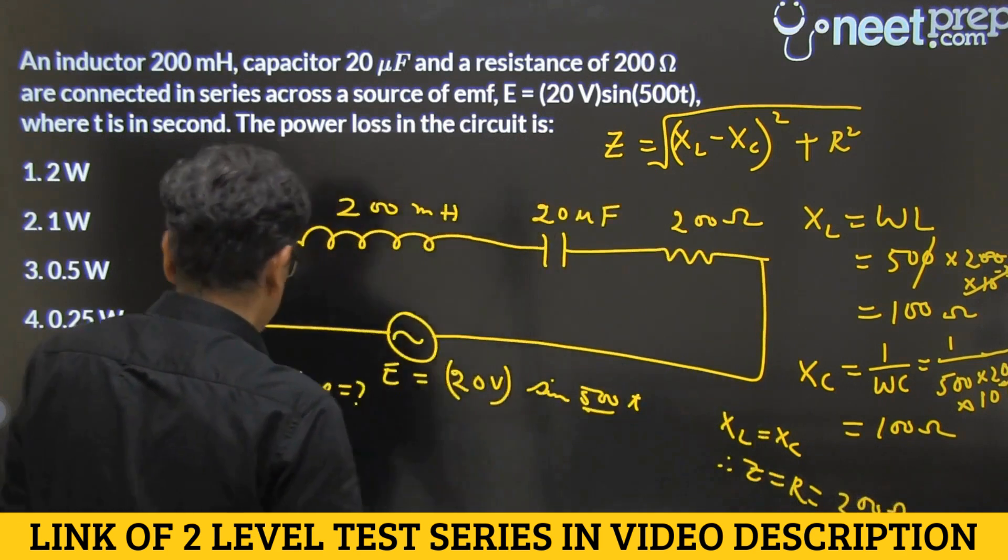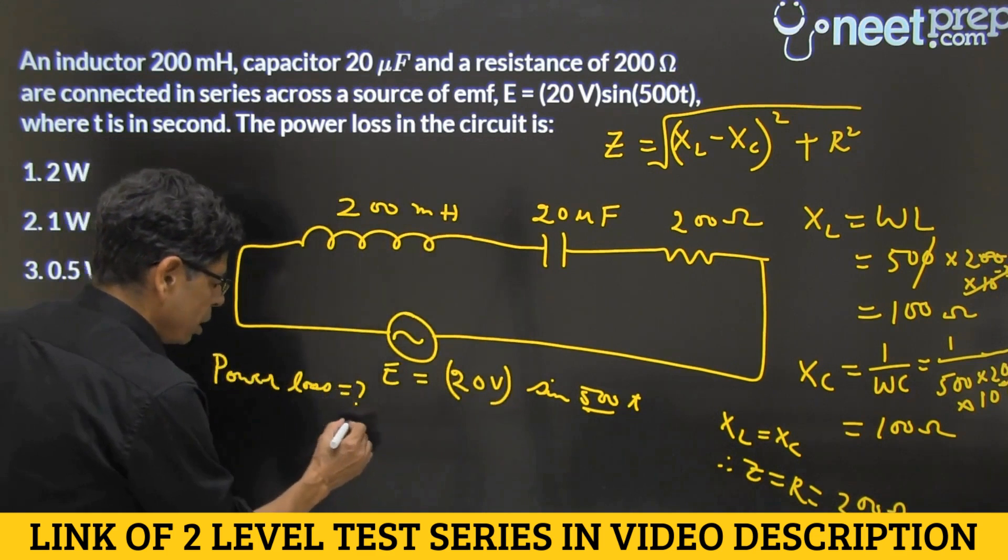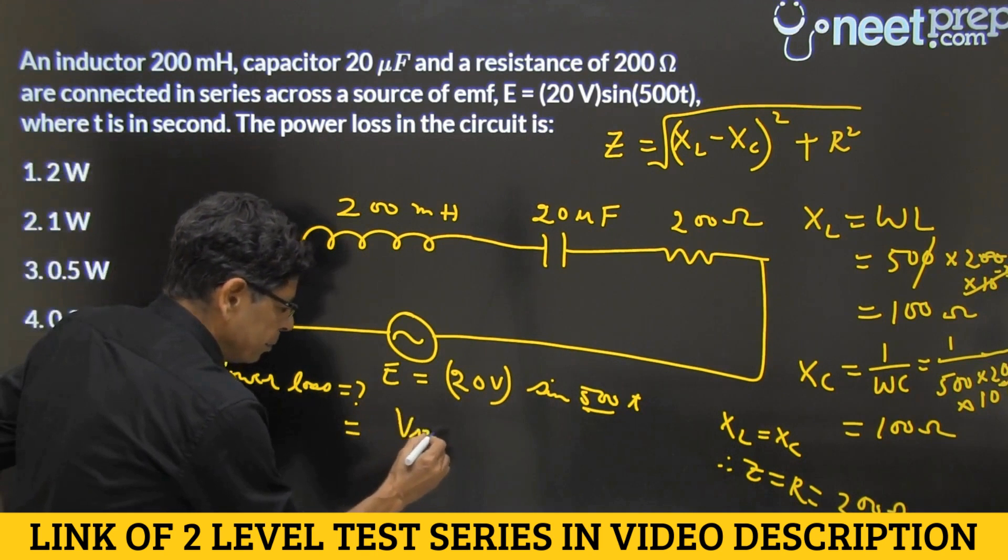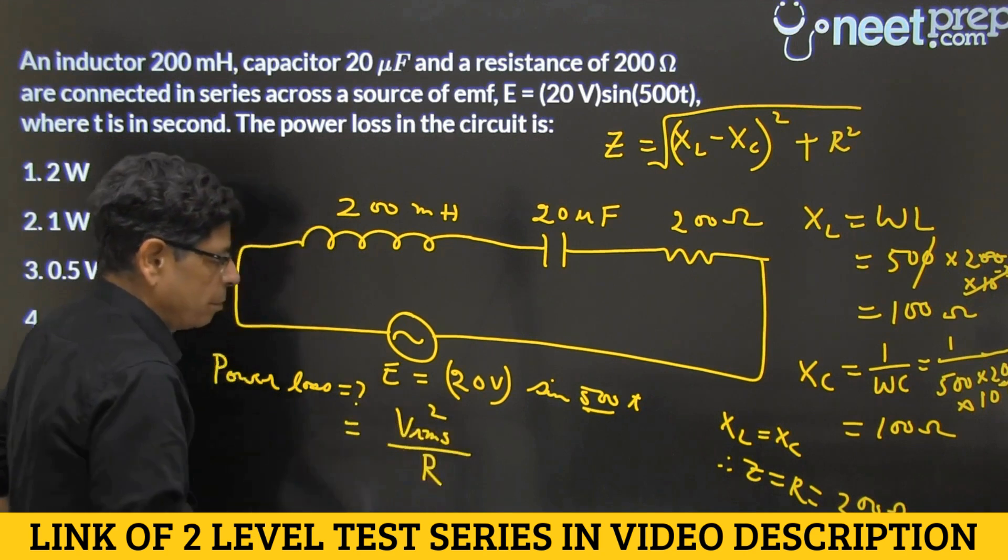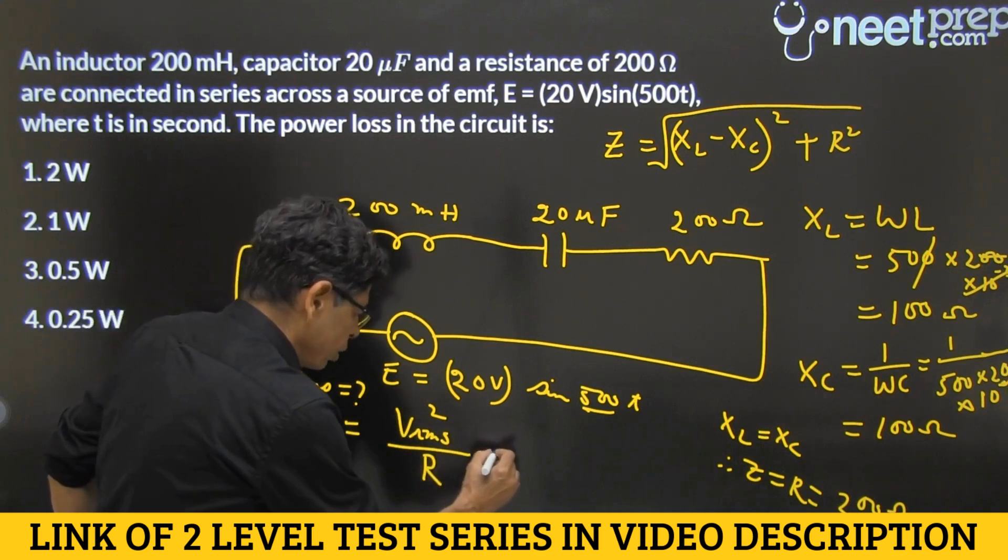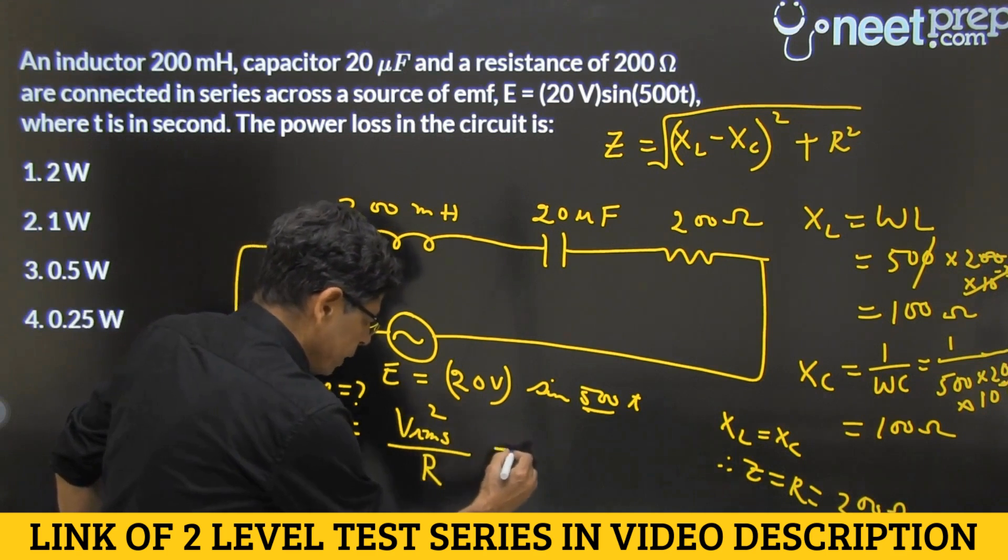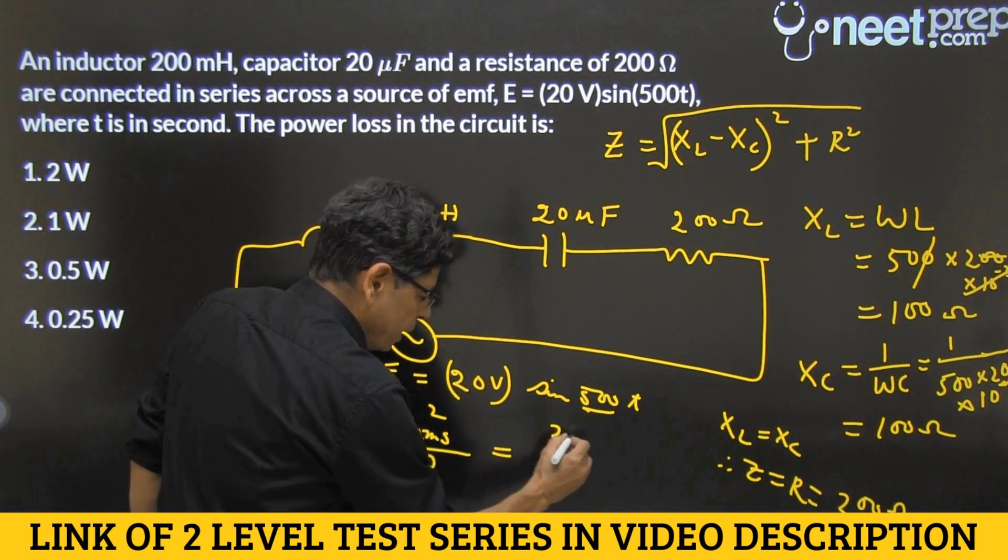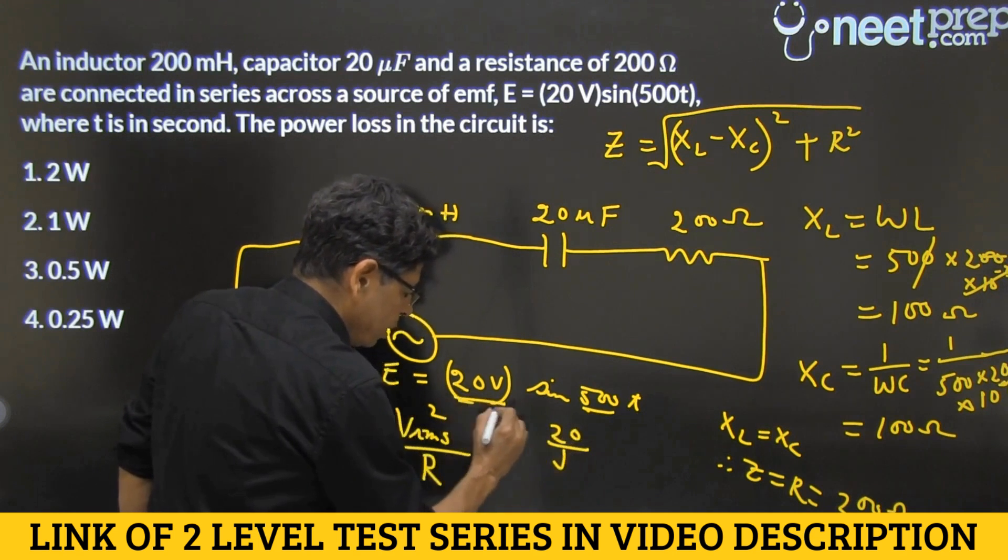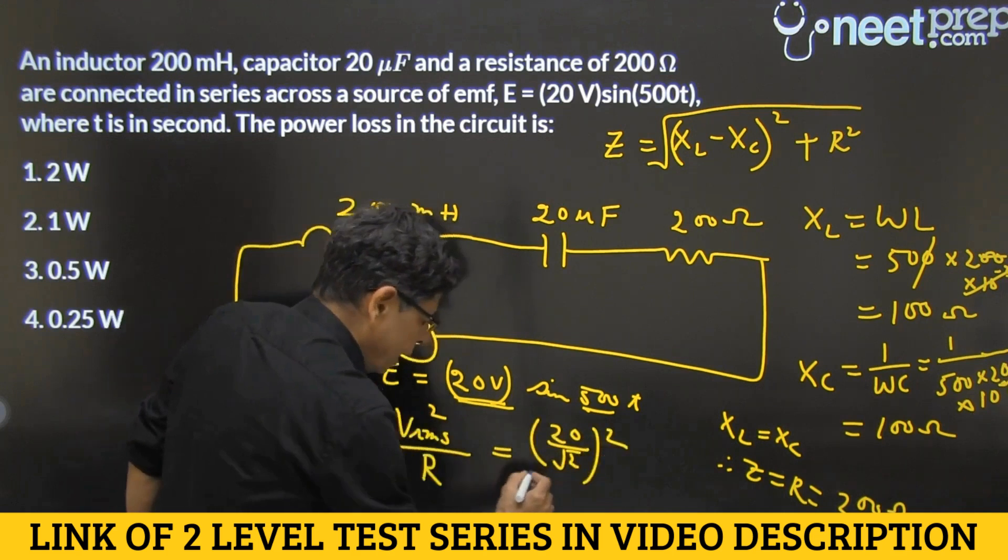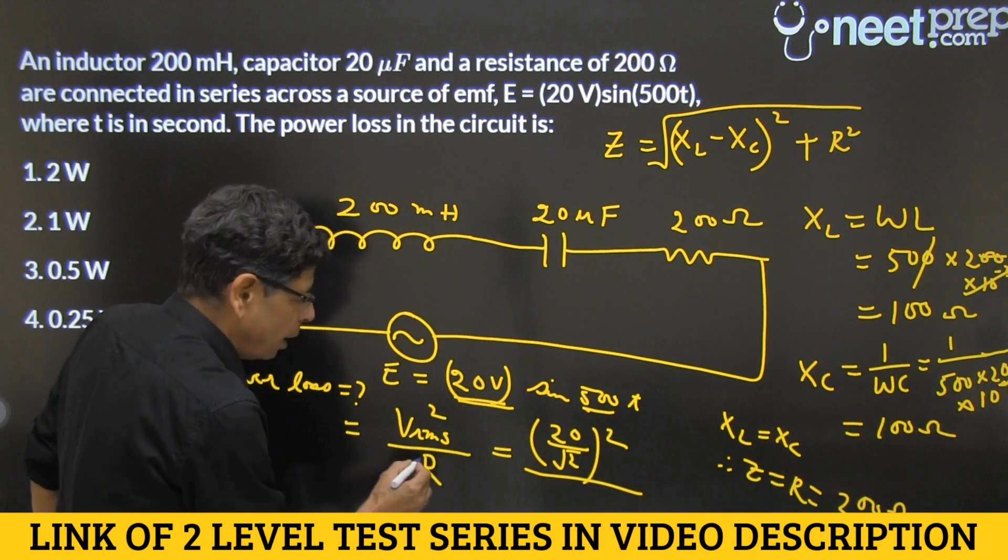So, we are now very close to getting our power loss, power loss can be now found out by doing V RMS square divided by R, because power factor is 0, so there is no cos of power factor, cos theta, the power factor, that is 1. So, V RMS is 20 by root 2, this is only the peak EMF, divided by root 2 to get V RMS, we square it, and divide by R or Z,